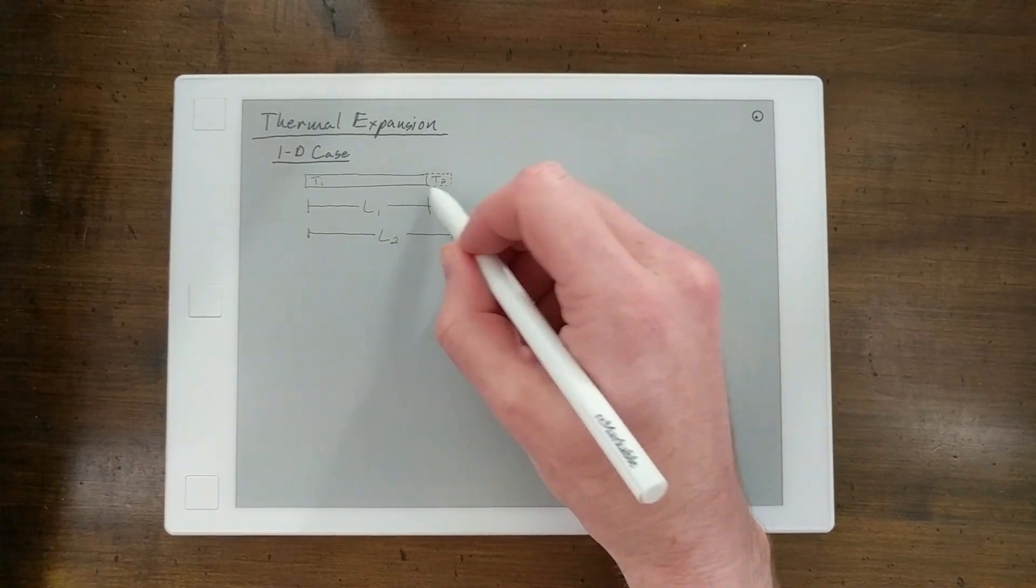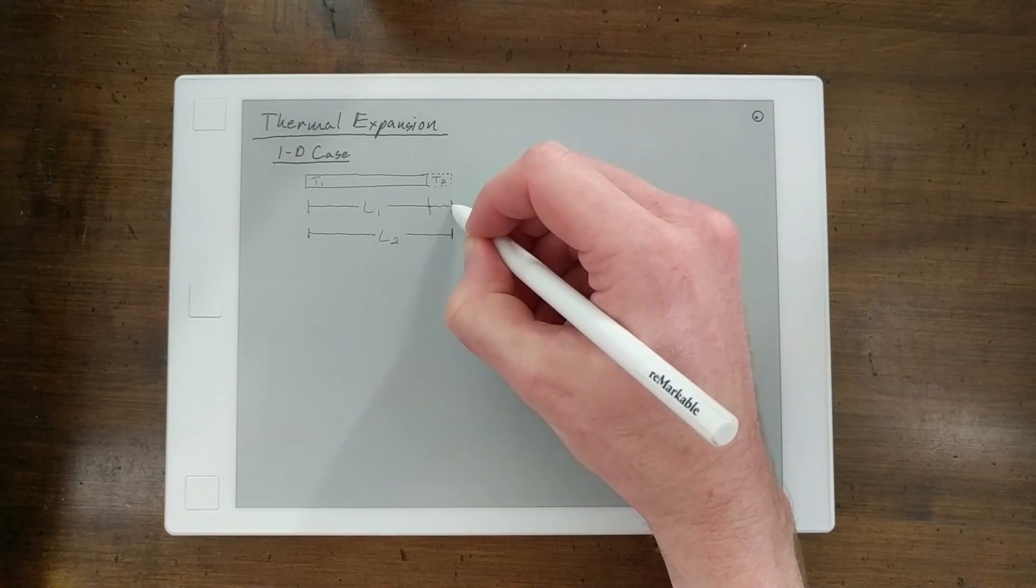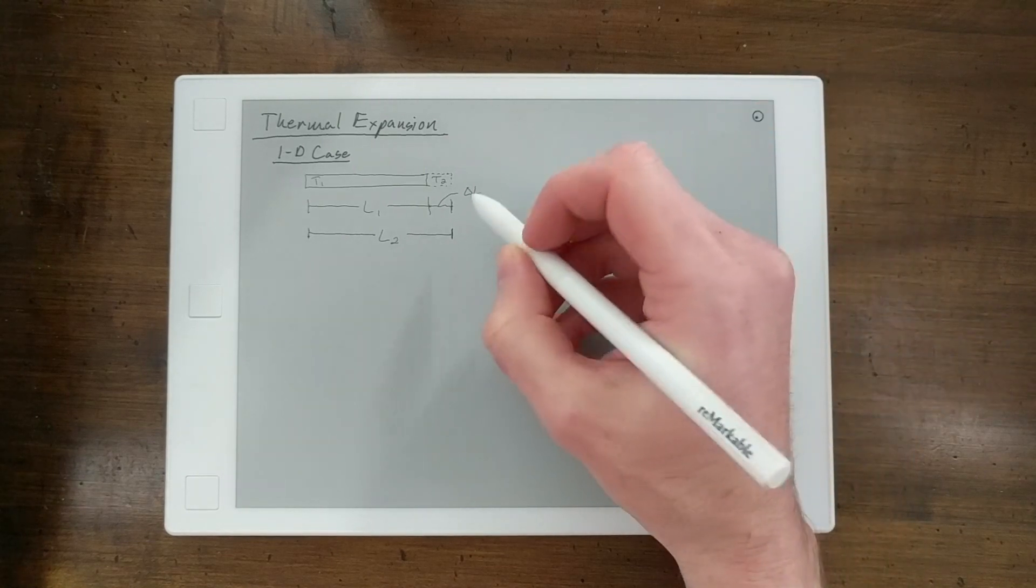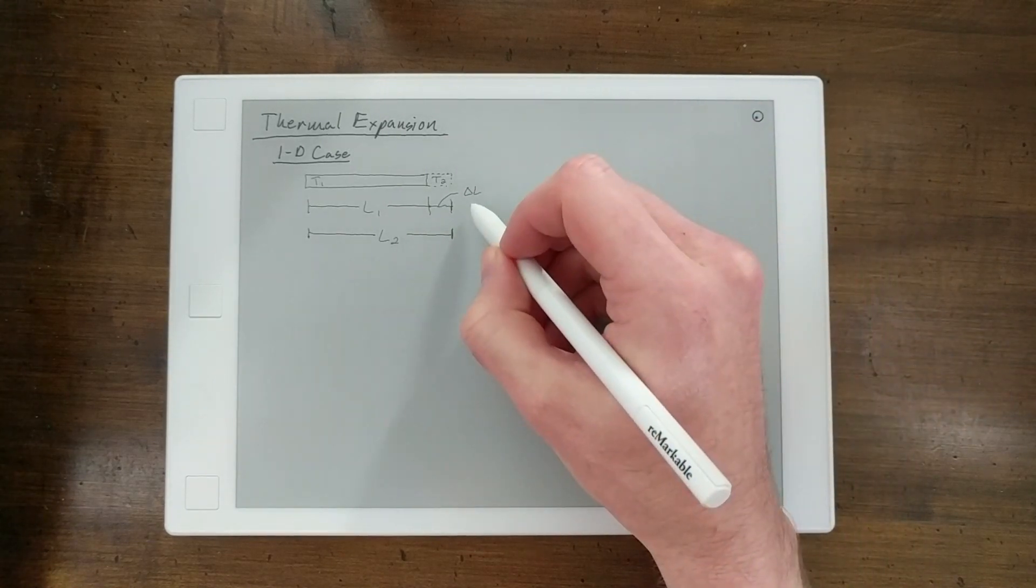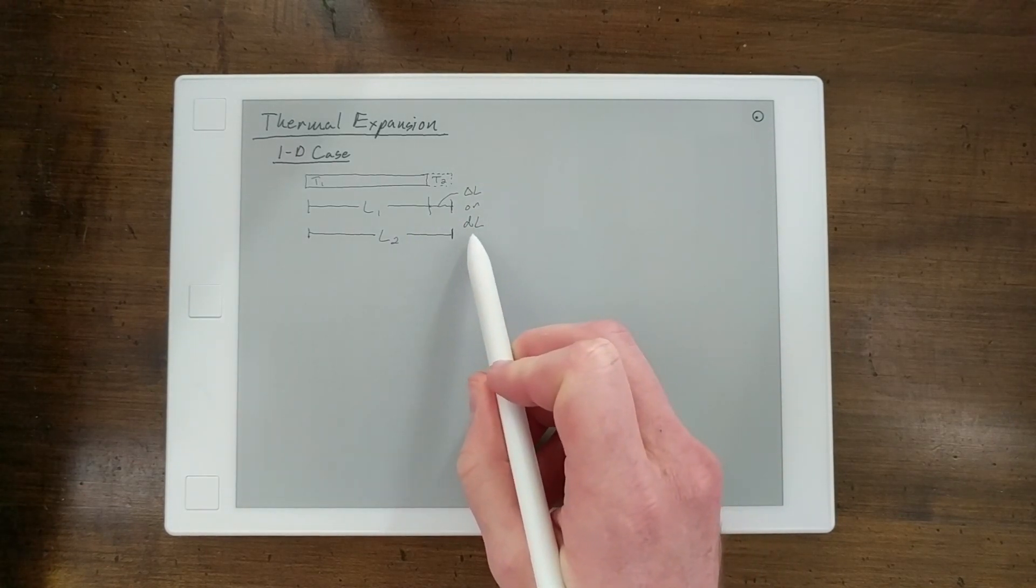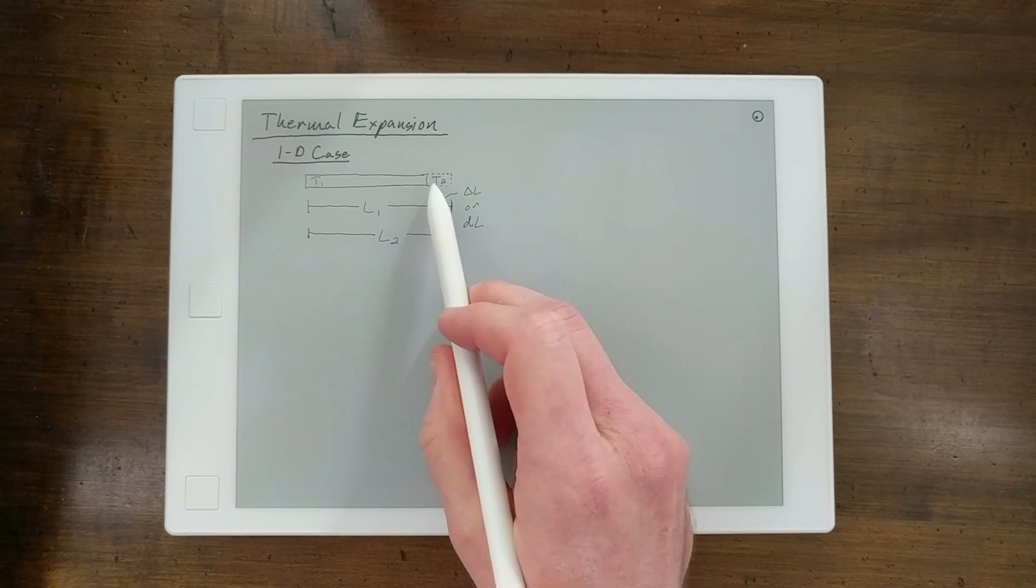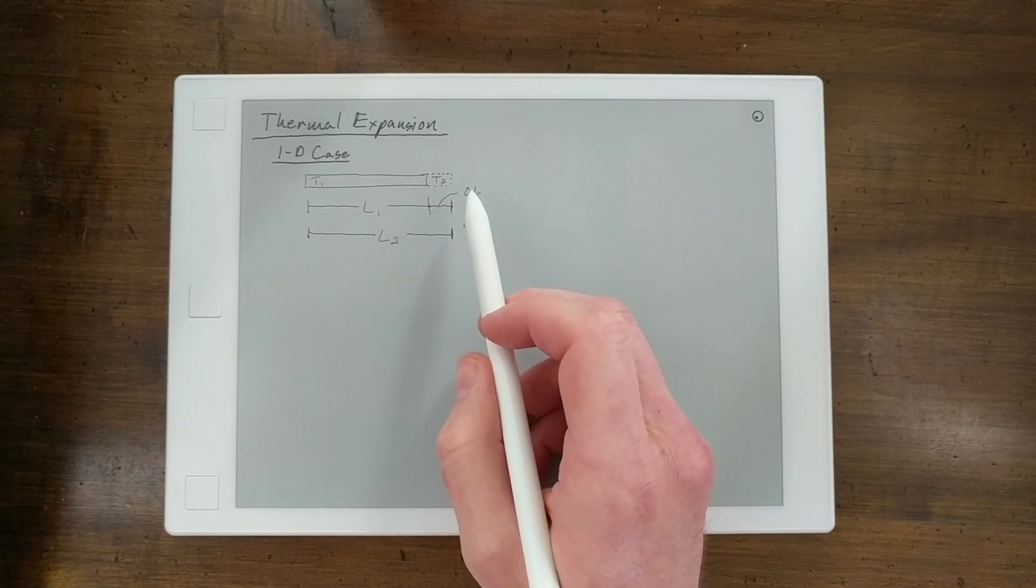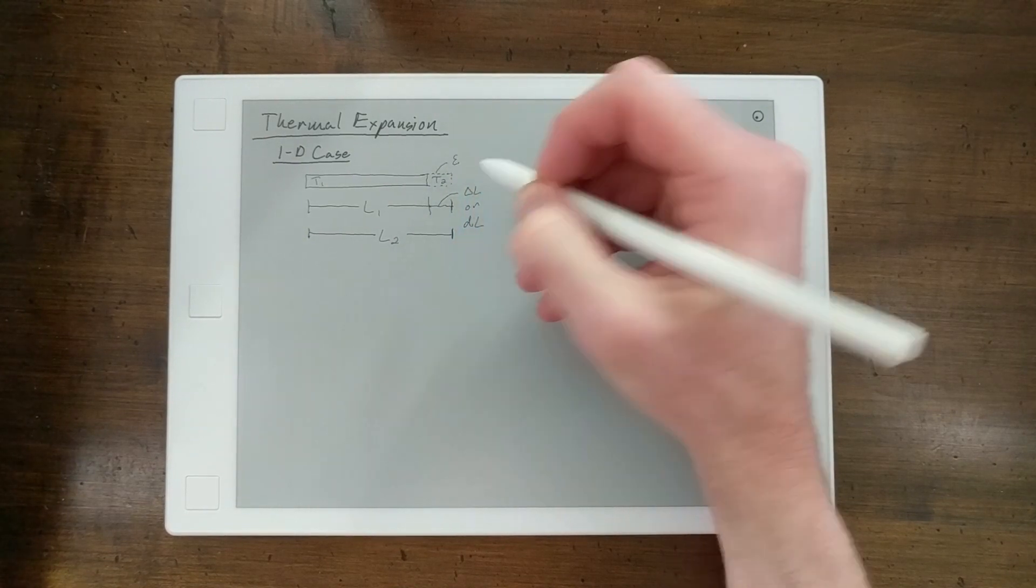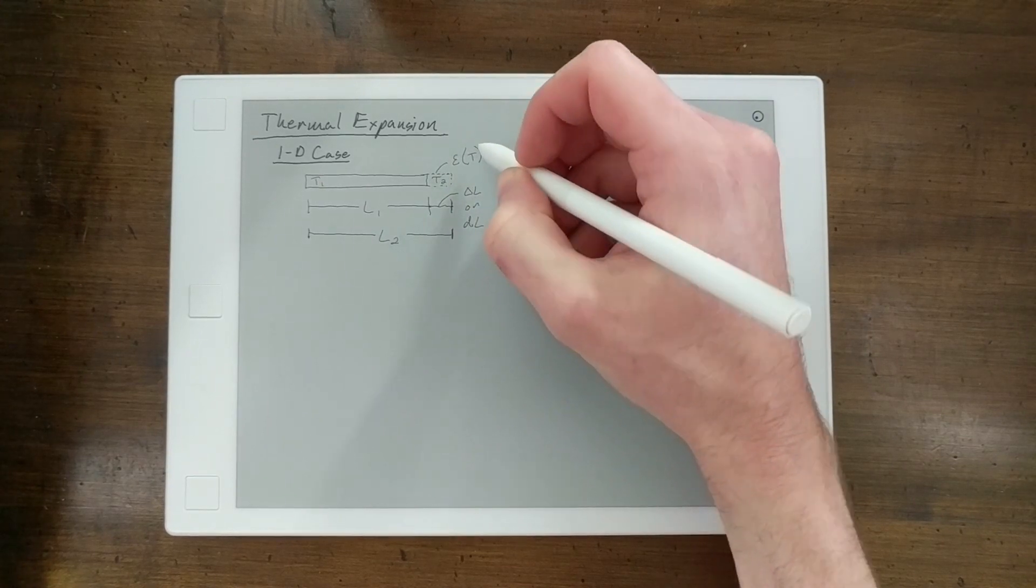So this change or this difference between L2 and L1 we'll either refer to it as delta L between the two lengths or we'll refer to it as DL which would be an incremental change in length with an incremental change in temperature DT. And what we're trying to do is really capture how this strain changes as temperature changes.